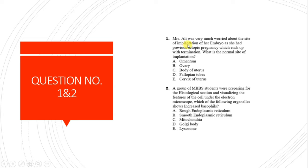Mrs. Ali was very much worried about the site of implantation of her embryo, as she had a previous ectopic pregnancy which ended with termination. The normal site of implantation occurs in the body of the uterus, while ectopic implantation could be in the fallopian tube, cervix, or vagina.